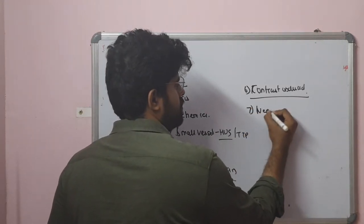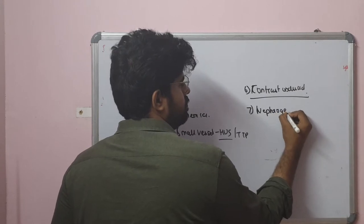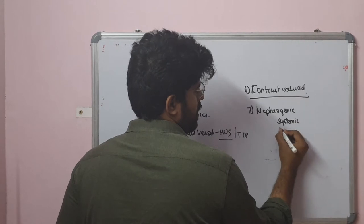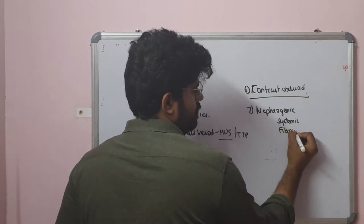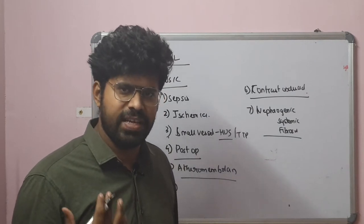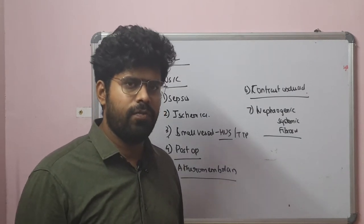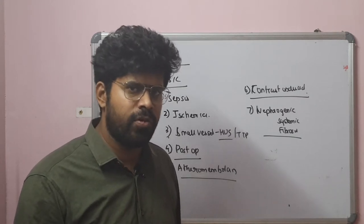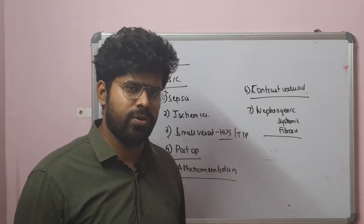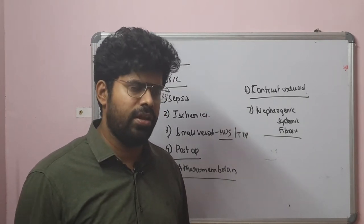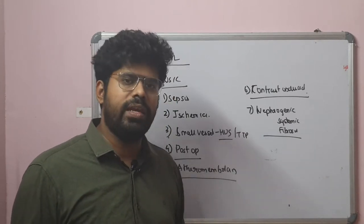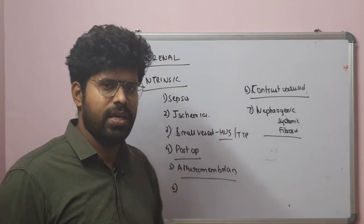Nephrogenic systemic fibrosis: in a patient with poor eGFR less than 30 ml per minute, administration of gadolinium for MRI can trigger a systemic inflammatory response in the form of diffuse subcutaneous induration. This is called nephrogenic systemic fibrosis and carries a deadly prognosis with MRI gadolinium administration.